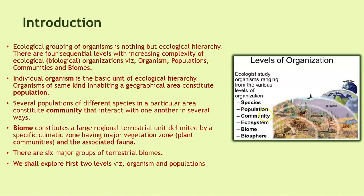The four levels are: organism, population, communities, and biomes. Individual organism is the basic unit of the ecological hierarchy. Organisms of the same kind inhabiting a geographical area constitute a population. Several populations of different species in a particular area constitute a community. Biome constitutes a large regional territory unit delimited by a specific climatic zone having major vegetation and associated fauna. We shall explore the first two levels: organism and population.